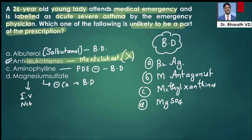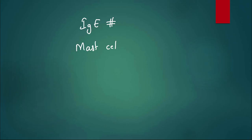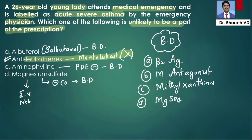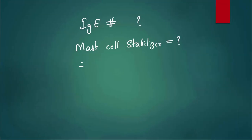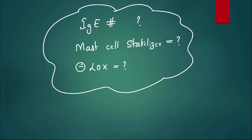As an assignment, can you tell me a drug which is an IgE blocker used in the prophylaxis of asthma, and also name a drug which is a LOX inhibitor used in the prophylaxis of asthma? These are repeatedly asked questions. If you are finding this content useful and beneficial, please put a comment, like the video, subscribe, and share with your friends. Thank you all — hope you are enjoying your sessions!